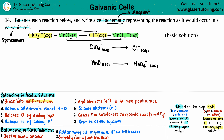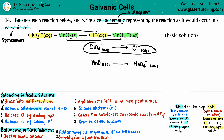Step two: balance all elements except hydrogen and oxygen. Don't look at H or O in this step. I have one chlorine on the left and one on the right — already balanced. I have one Mn on the left and one Mn on the right — already balanced. So we can skip right over step two. We work through steps two, three, four, etc. for both equations together before moving to the next step.